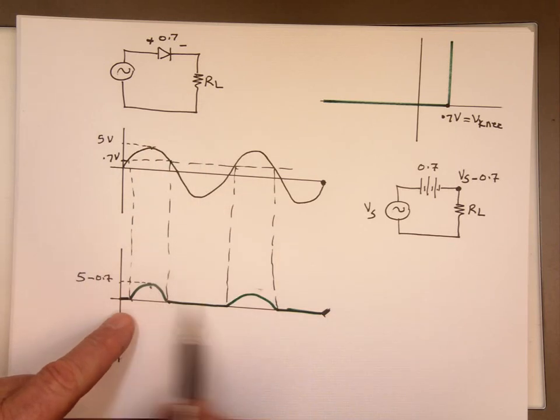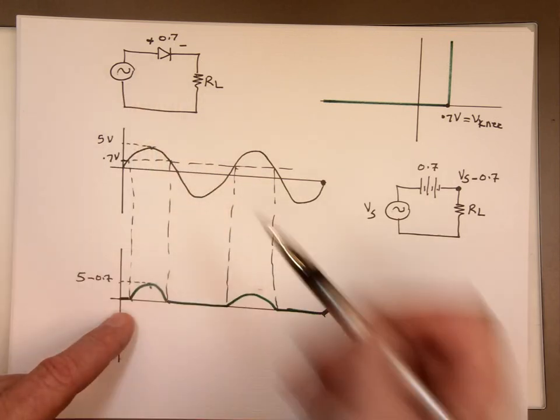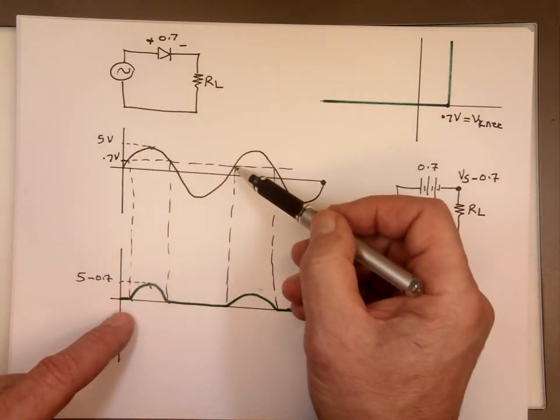So right there, this diode, actually nothing going through it. There's no current. The voltage is staying the same. Right here, it repeats itself, and nothing is going to happen until we hit the 0.7 volts. This goes to 0.